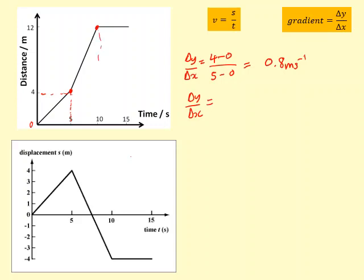So the calculation is 12 minus 4 over 10 minus 5. So that gives me 8 over 5, which gives me 1.6 meters per second. So it's actually moving twice the speed compared to the beginning.